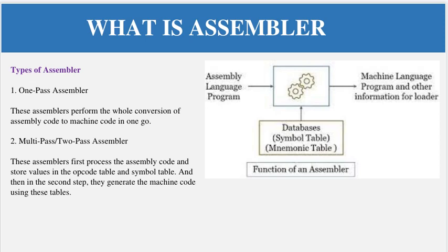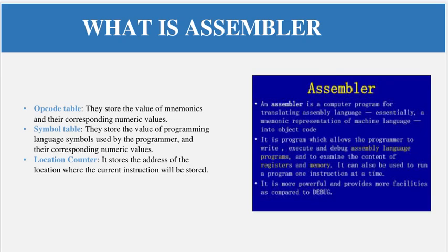Pass means the conversion of source code to machine language code, i.e., zeros and ones. Multi-pass assemblers first process the assembly code and store values in the op code table and symbol table, then in the second step generate the machine code using those tables. The op code table stores values of memory locations and their corresponding numeric values. The symbol table stores values of programming language symbols used by the programmer and their corresponding numeric values. The location counter stores the address of the location where the current instruction will be stored.